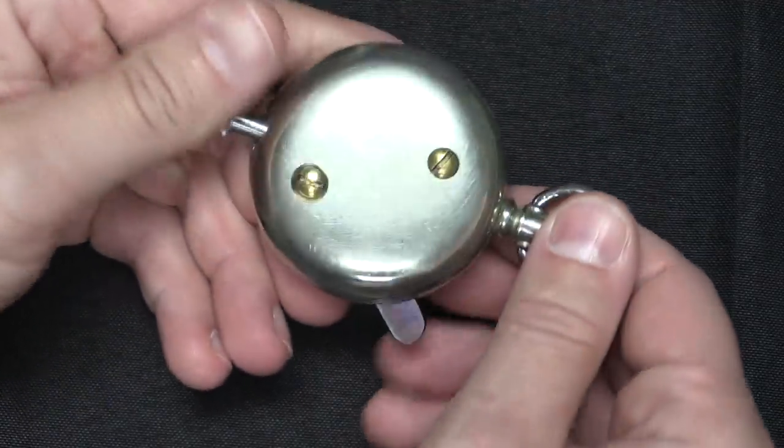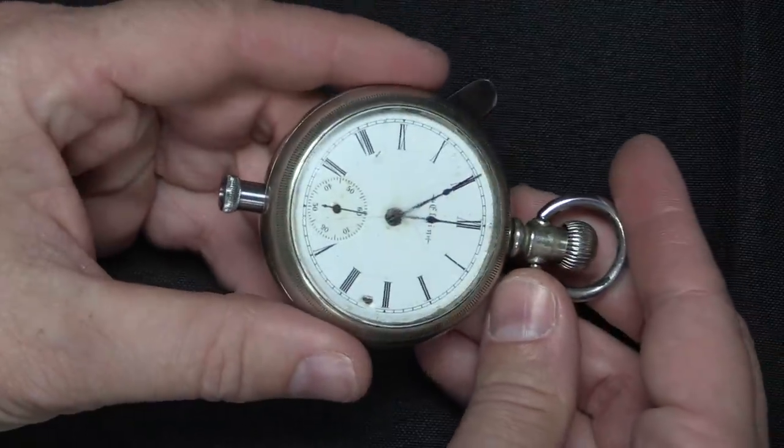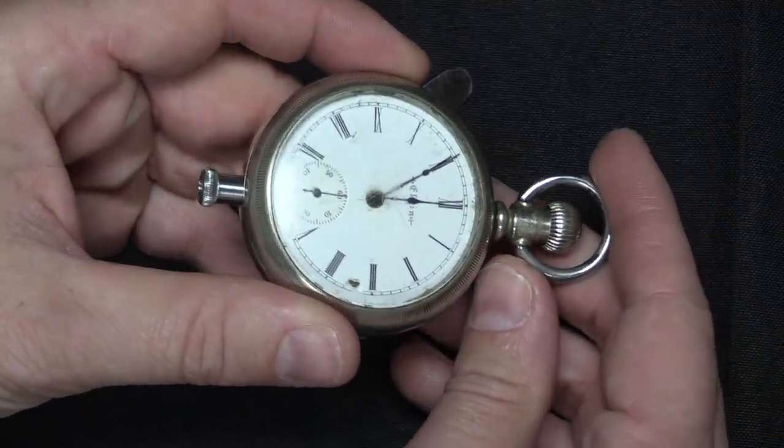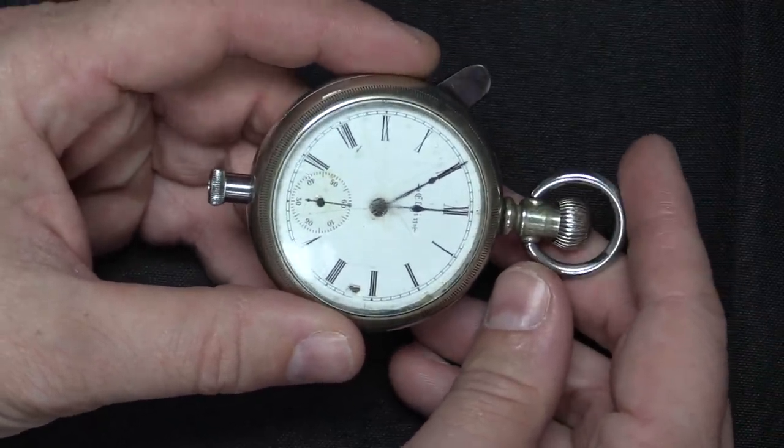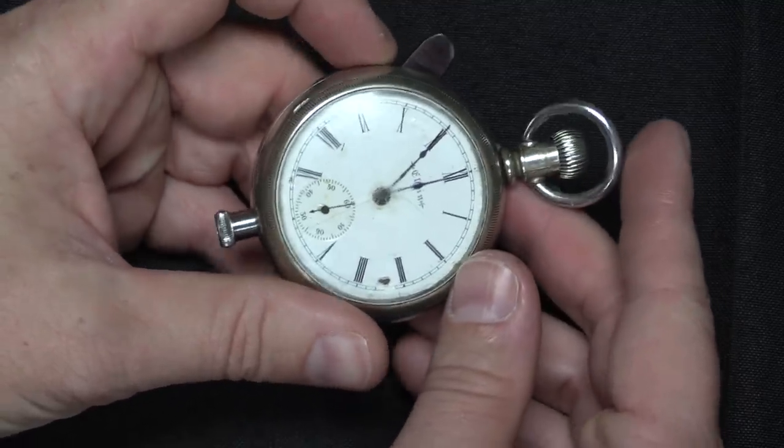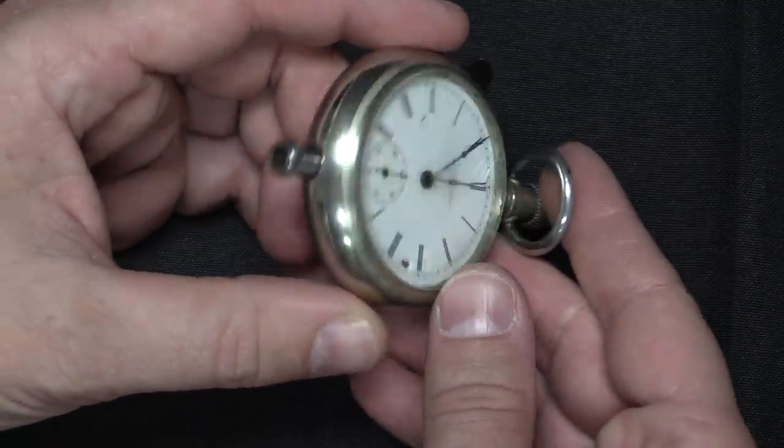And what he has done here is taken an Elgin pocket watch, this was a company that was in business from the mid-1800s until the 1960s, a famous pocket watch manufacturer. And he has converted this into sort of a gun.